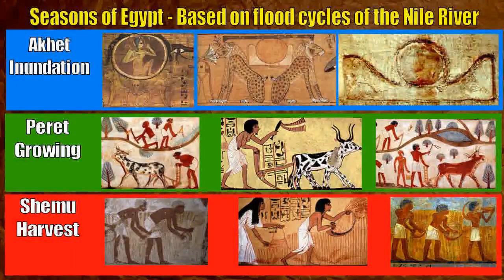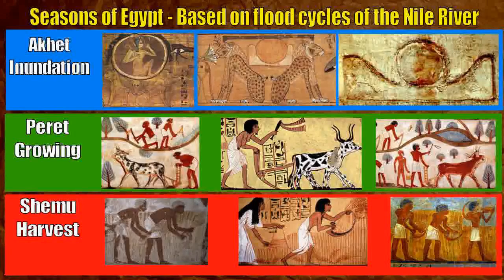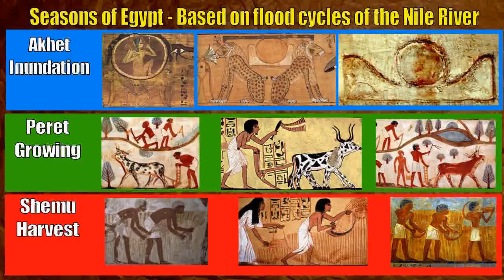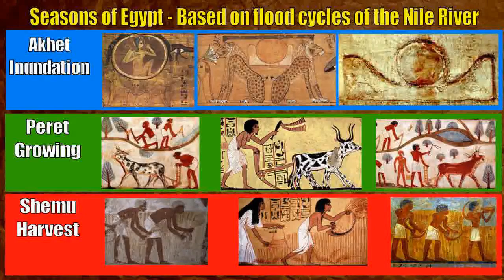In ancient Egypt there were three seasons, and these seasons were based on the yearly flooding of the Nile cycle. We had Akhet, the inundation or the flood — and we see the symbols of Akhet, especially young Horus surrounded by the Ouroboros. Following this we had Peret, the growing cycle. We can see many depictions from the ancient Egyptians themselves, including the use of cattle — they did have pack animals, cattle, and donkeys.